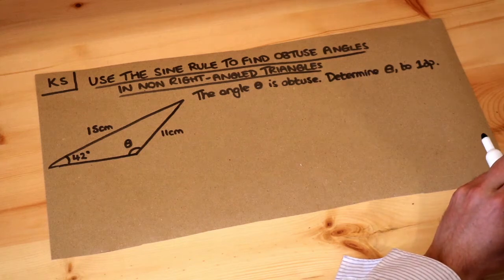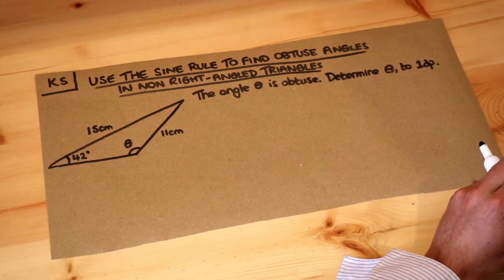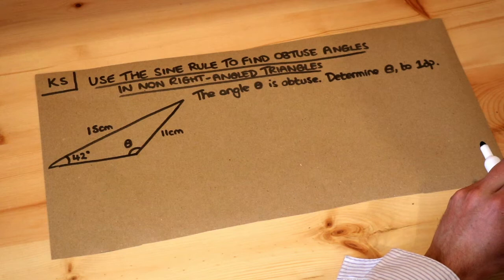Hello and welcome to Dr. Ross Mass's key skill video on using the sine rule to find obtuse angles in a non-right angle triangle.